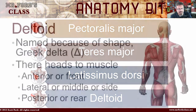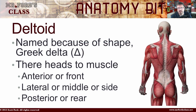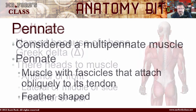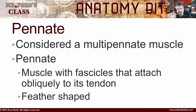The deltoid is named deltoid because of its shape. It looks like the Greek letter delta, which is that triangle. There are three heads to the muscle: we have the anterior or front, we have the lateral — also known as the middle or side — and then we have the posterior or the rear. It is considered a multi-pennate muscle, meaning it has fascia that attaches obliquely in a slanting position to its tendon, so it looks like a feather. That's the type of muscle category this falls in.